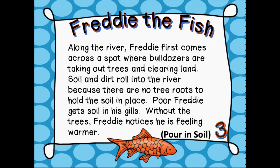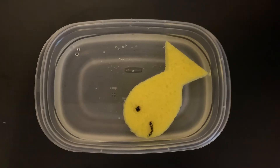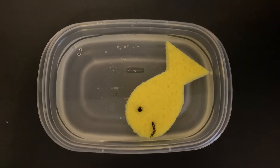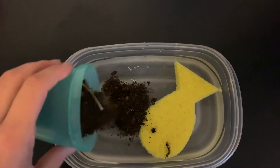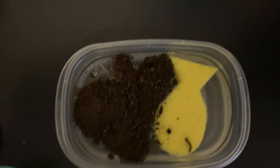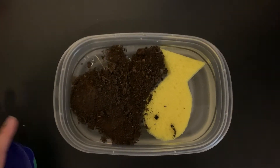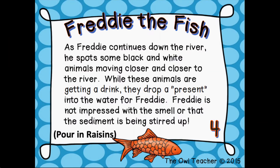He heads downstream, ready to see the world. Freddie first comes across a spot where bulldozers are taking out trees and clearing land. Soil and dirt roll into the river because there are no tree roots to hold the soil in place. Poor Freddie gets soil in his gills, and without the trees, Freddie notices he is feeling warmer. I'm going to take my little cup of soil and add that in.